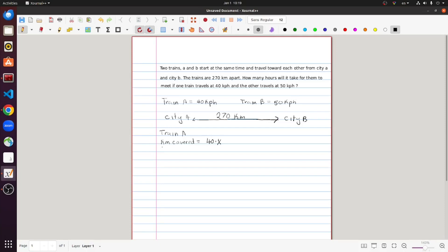And the kilometers left is equal to 270 minus 40 times x. Because 40x is how much distance we've traveled and how much is left is just that minus the total distance we have to cover.